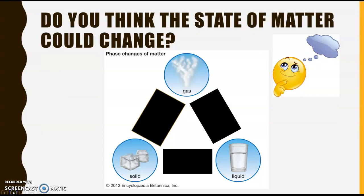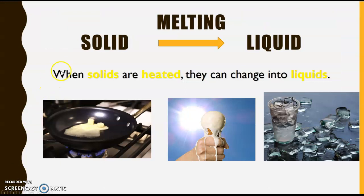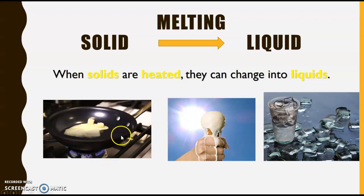Do you think the state of matter could change? Do you think that liquids could change to solids, or gases could change to solids? Let's find out. Solids can change to liquid — when solids are heated, they can change into liquids. For example, here is a block of butter. Heat energy was added onto the pan and now the butter is melting. The process by which a solid changes to liquid is called melting.